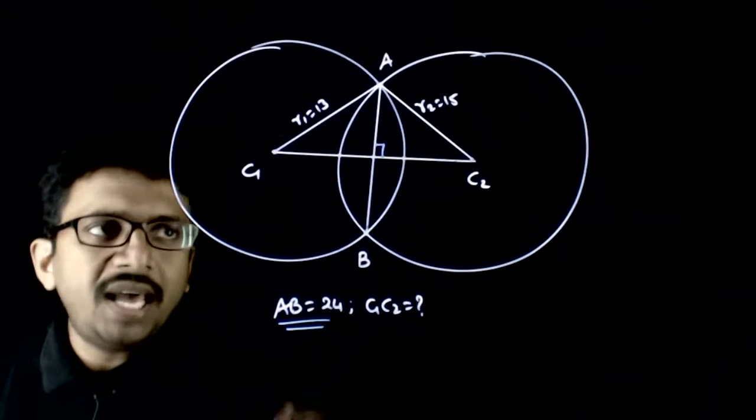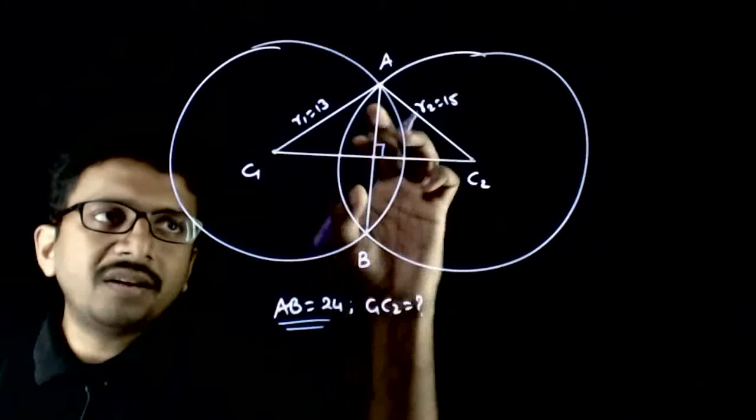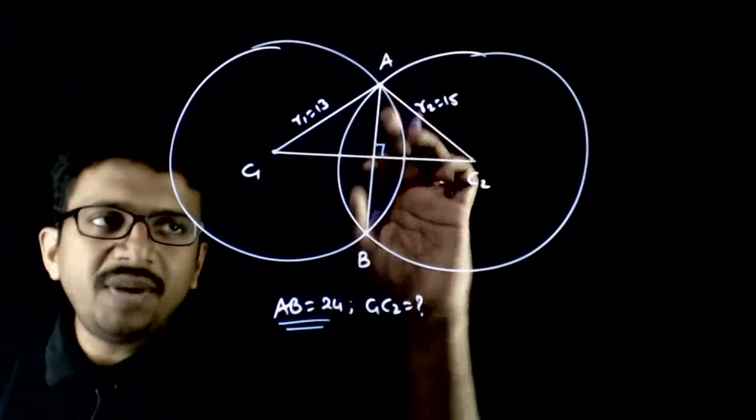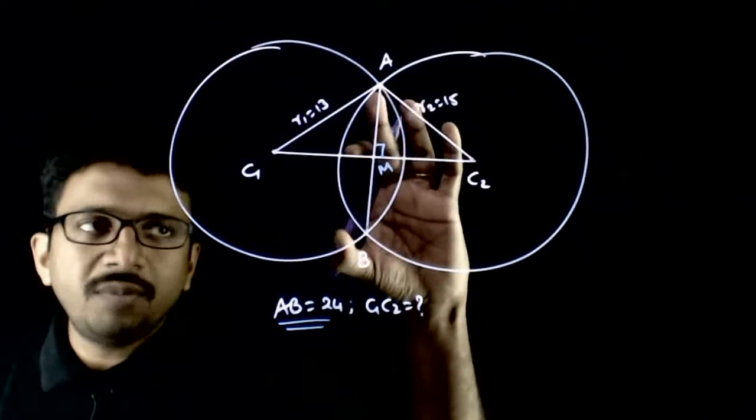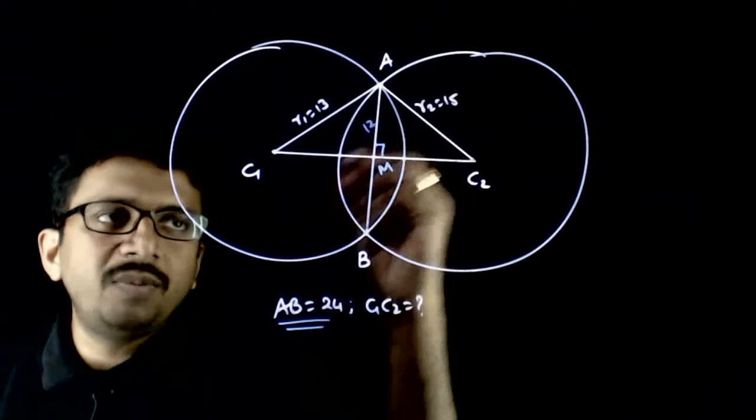So this angle is 90 degrees. Hence, if the line is perpendicular, it bisects the chord. So AB is bisected by this point M. That is, if the total length of AB is 24, this length will be equal to 12.